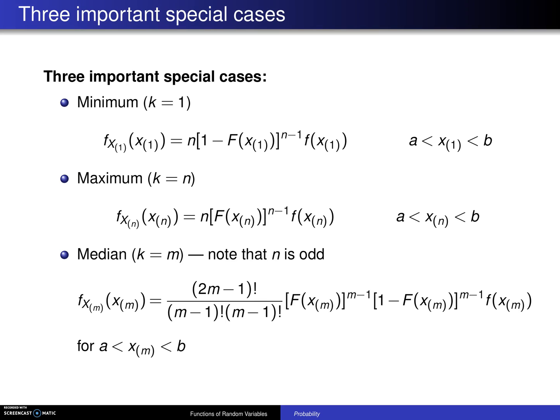In the case of the result for a single-order statistic, there are three special cases that come up quite often. And the first special case is for the minimum.